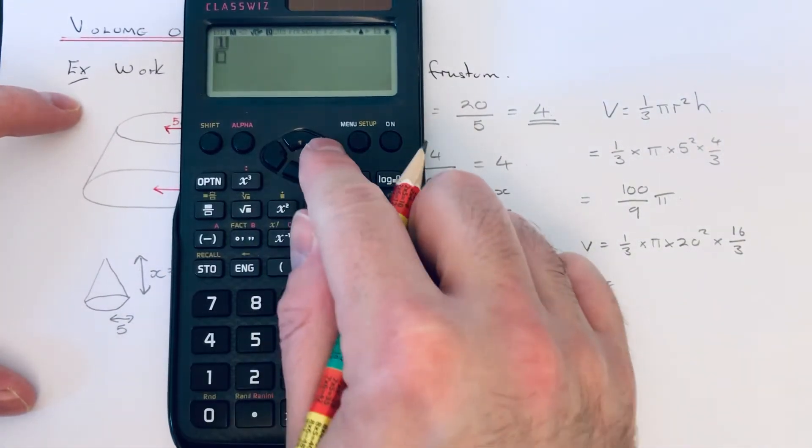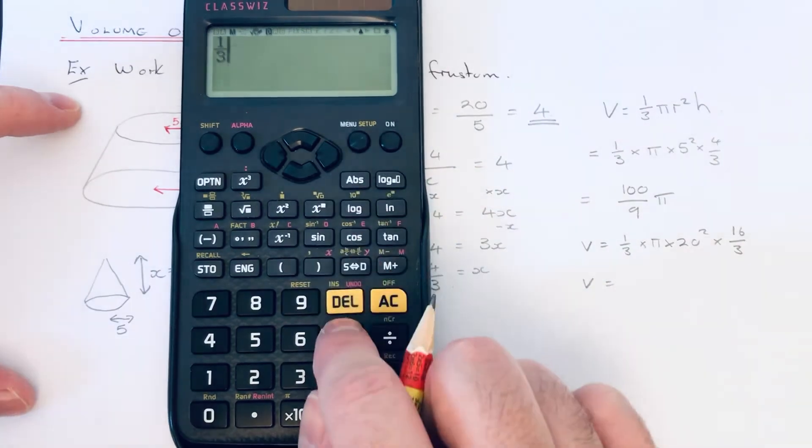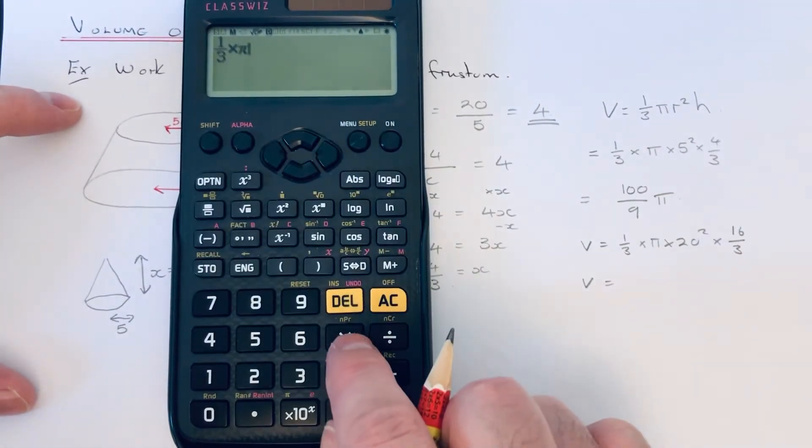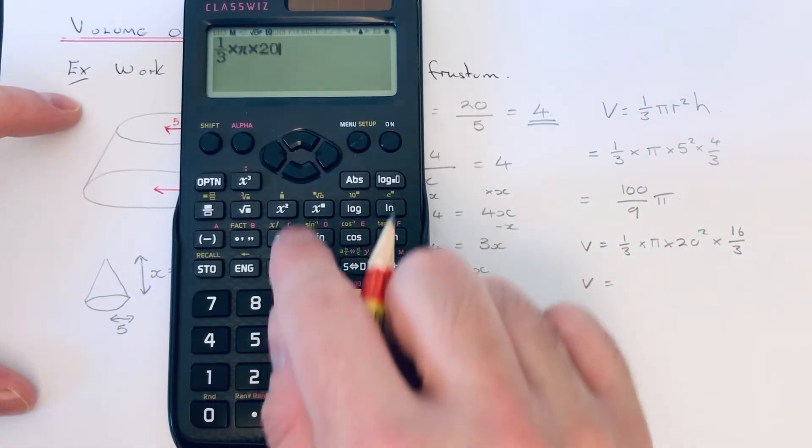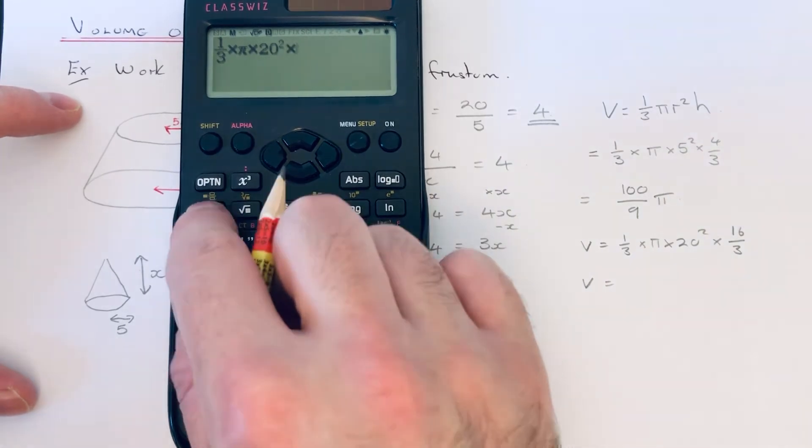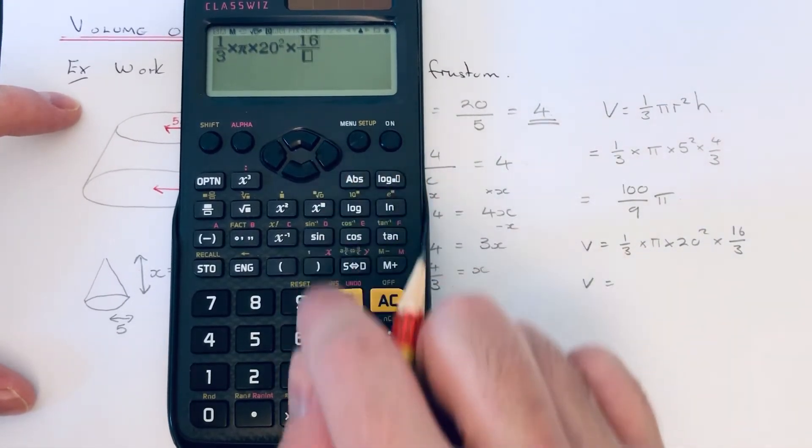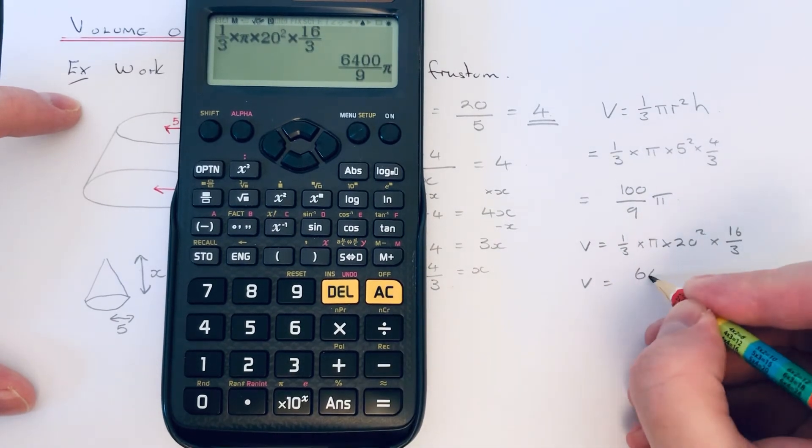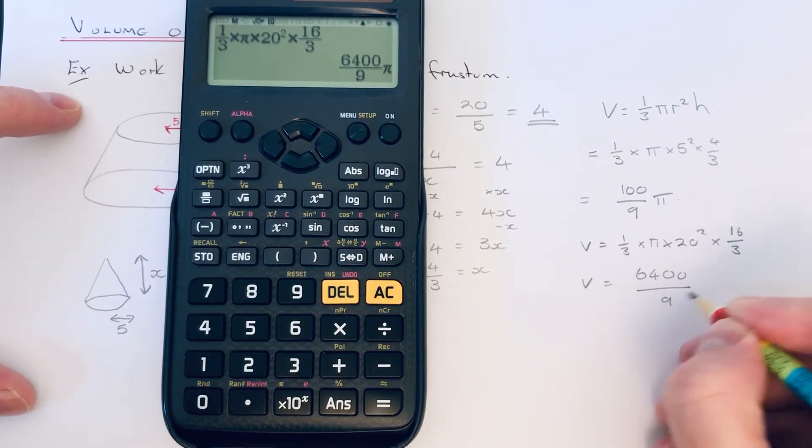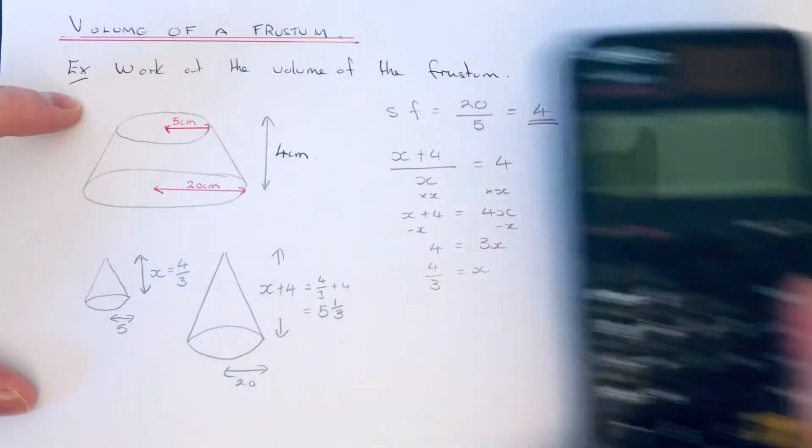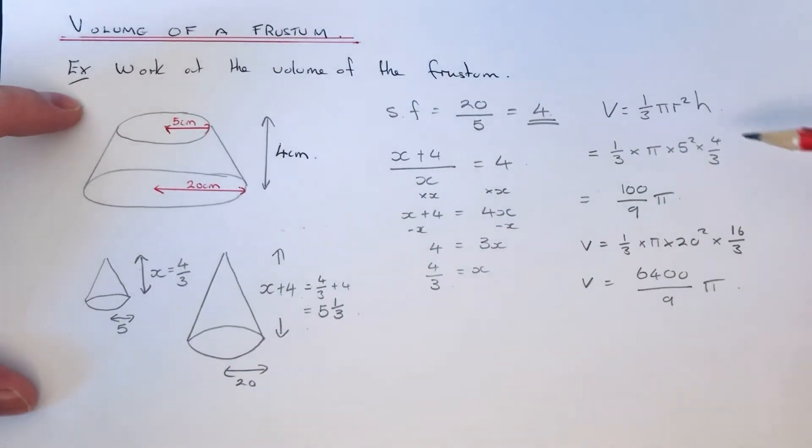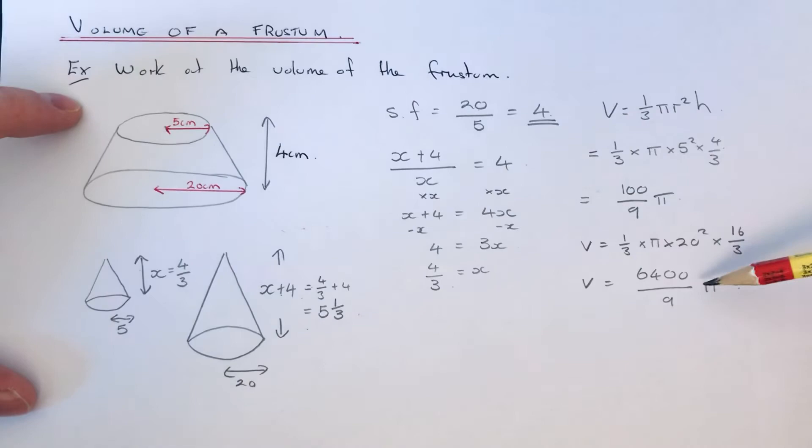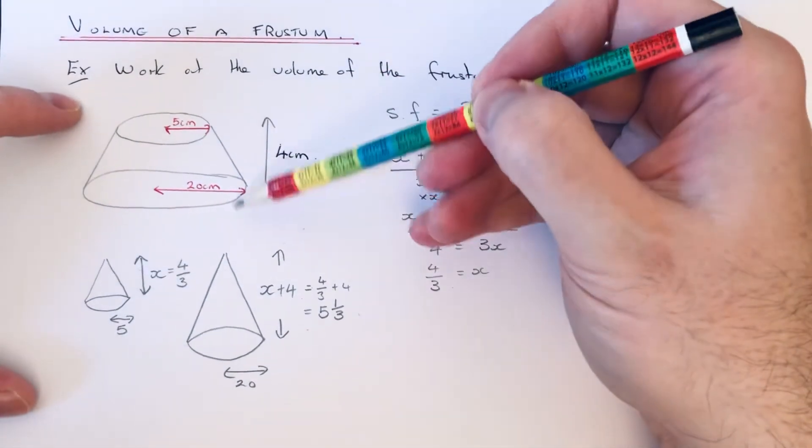It would be one third times pi times 20 squared times 16 over 3. So we get 6400 over 9 pi. So if we subtract the small cone away from the large cone, that will give us the volume of the frustum.